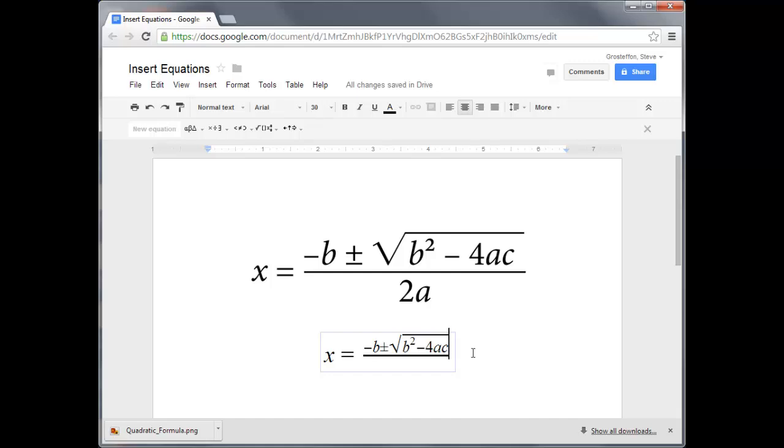And then we're also done with the numerator. So we press enter to exit the numerator and it takes us to the denominator. In the denominator, we have 2a.